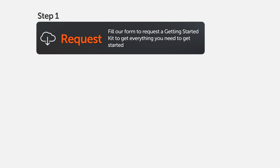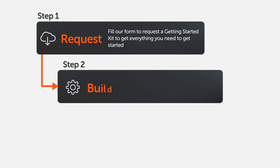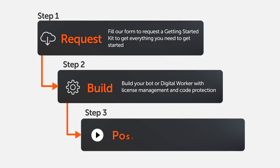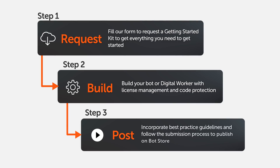Step one: request for a getting started kit by filling out a form and get everything you need to get started. Step two: build your bot or digital worker with license management and code protection. Step three: incorporate best practice guidelines and follow the step-by-step submission process to publish your bot or digital worker on BotStore.